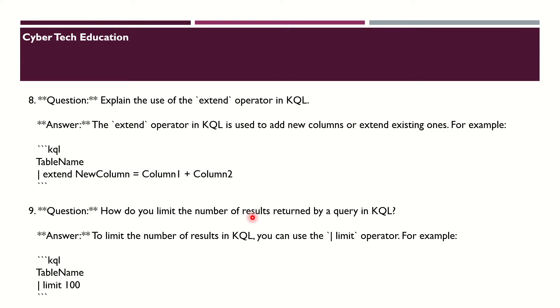The next question is: how do you limit the number of results returned by a query in KQL? To limit the number of results in KQL you can use the limit operator. For example: TableName | limit 100.